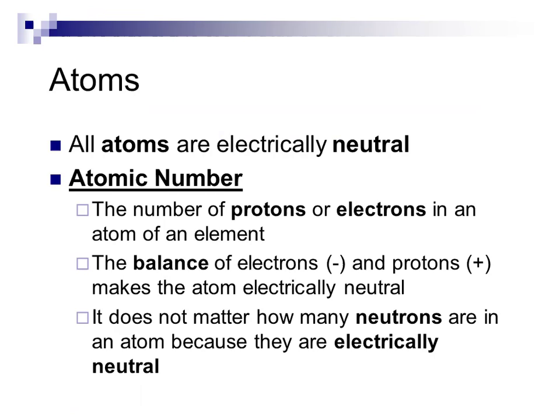So for the atomic number, this is going to be the whole number that you see on the block of the periodic table, and this represents the number of protons or the electrons in an atom of the element. So the protons and electrons normally equal each other. The balance of electrons and protons makes the atom electrically neutral, so it doesn't matter how many neutrons there are because they're already neutral.